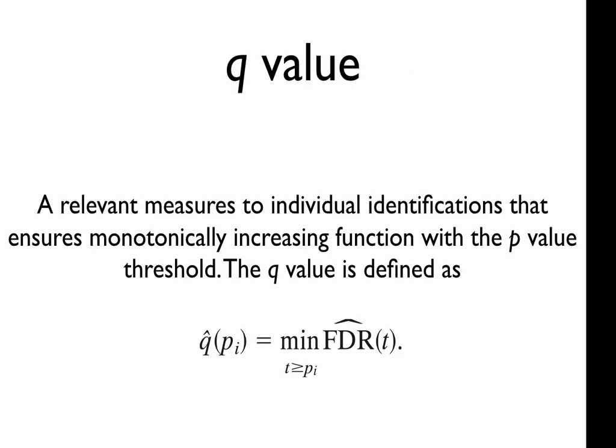Storey and Tibshirani also define what they call the q-value, which is a relevant measure for individual identifications. The q-value is defined as the minimum false discovery rate including the current p-value threshold, ensuring the FDR is a monotonically increasing function with the p-value threshold.